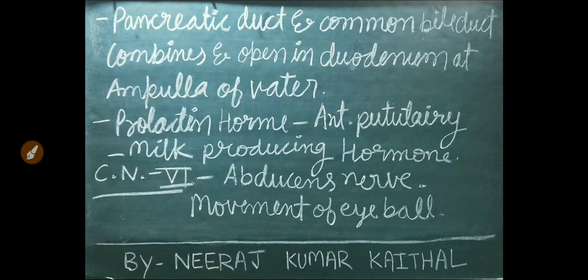Prolactin hormone is secreted by the anterior pituitary. Its function is to produce milk. Cranial nerve number 6 is the abducens nerve. Its function is movement of the eyeball.